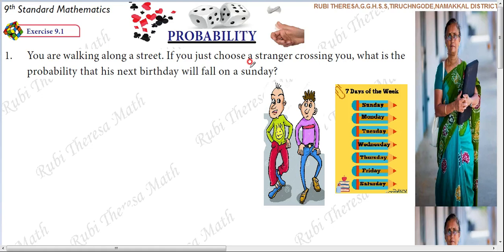Your birthday could fall on a Sunday, but there are chances. Probability — what do we say? Chance of getting something. Probability is nothing but the possibility of getting something, the possibility of an event happening. What is the possibility that it happens or it doesn't happen? So that's the probability.